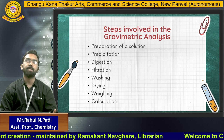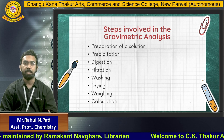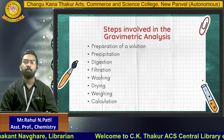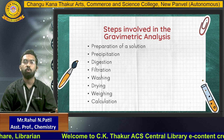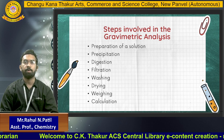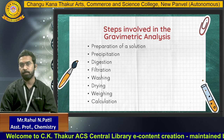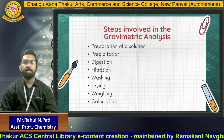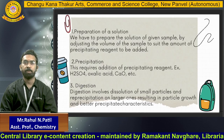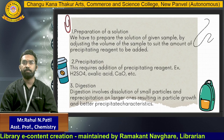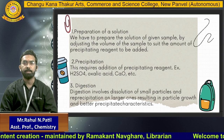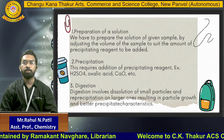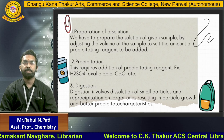The steps involved in gravimetric analysis — from start to end — covering preparation of solution through to the yield of the product. Step one is preparation of a solution: prepare the solution of the given sample by adjusting the volume to suit the amount of precipitating reagent to be added. Step two is precipitation: this requires addition of a precipitating reagent, such as sulfuric acid, oxalic acid, or calcium oxide, which causes a precipitate to start forming in the solution.